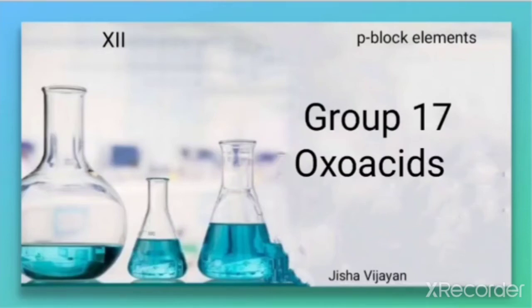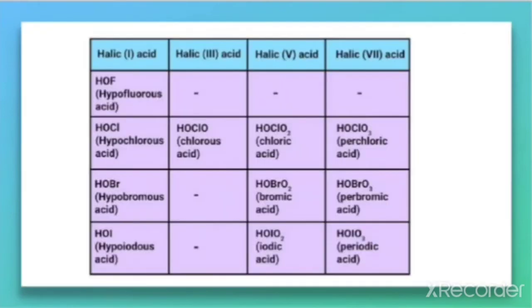Hello students, let us discuss the oxoacids of Group 17 elements. Among the halogens, fluorine has little tendency to form oxoacids due to its high electronegativity and small size. Looking at the table, there is only one oxoacid for fluorine, but others can form two to three or four oxoacids depending upon the oxidation state of the halogen.